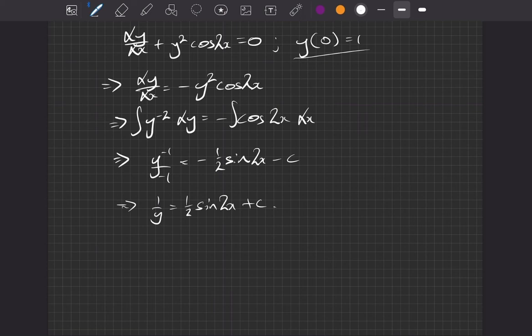So we're going to now plug in our initial value, the y(0) is equal to 1 up there, so that tells us that y is 1 and that x is 0. So y is 1 means we have 1 over 1 is equal to a half sine of 0 plus c. Now we know sine of 0 is equal to 0, so that whole bit will be 0, so what we're left with then is effectively that c is equal to 1. Beautiful.